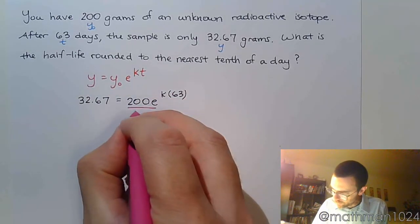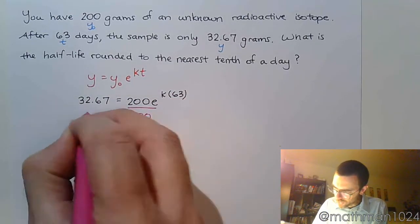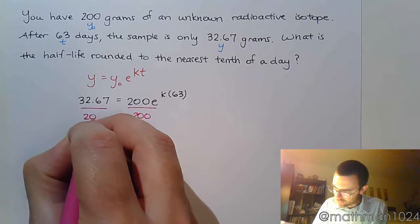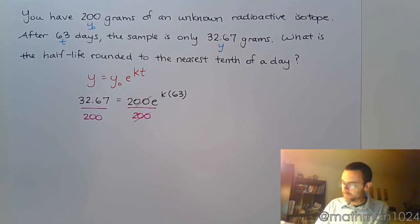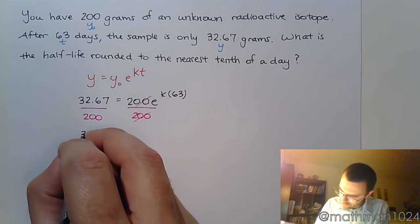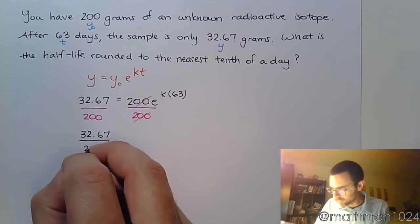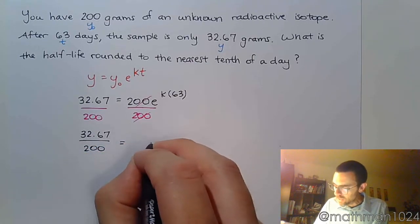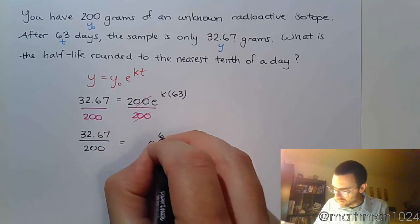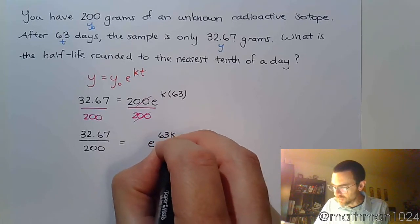So divide both sides by 200. Those guys go away. So 32.67 divided by 200 is equal to e raised to the 63K.